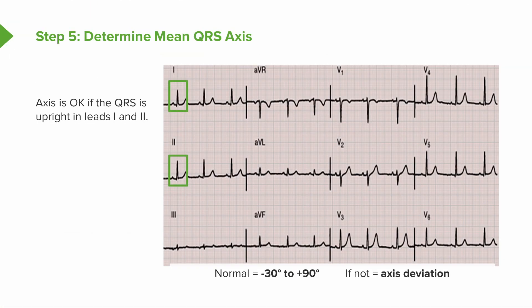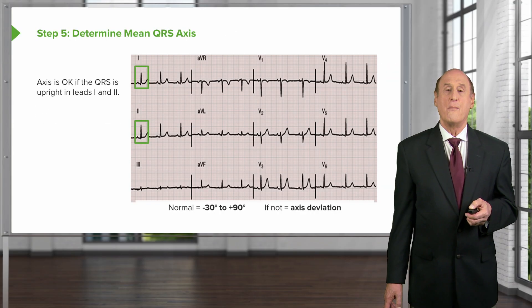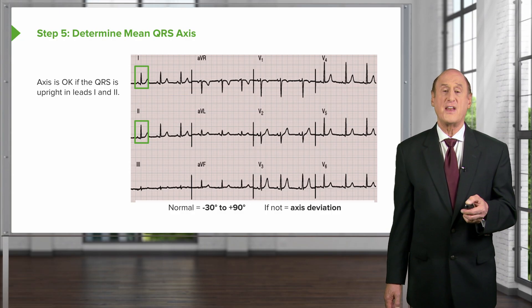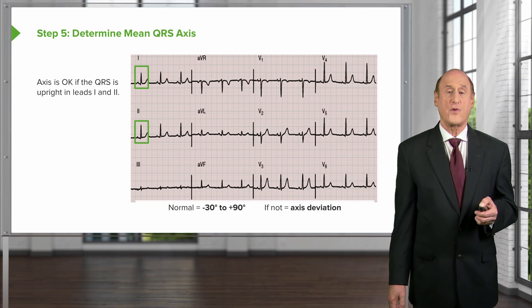The rule of thumb: look for the lead where the voltage up and down is equal — the axis is 90 degrees from that — then look for the lead with the maximum R wave, which tells you which direction along that 90-degree line the axis points. Normal axis is between minus 30 and plus 90. If the axis goes more negative than minus 30, that's left axis deviation; if it goes more positive than plus 90, it's right axis deviation.